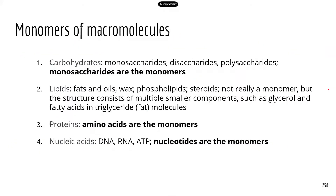Here is a quick summary of the monomers of the four macromolecules. For carbohydrates, the monomers are monosaccharides — "mono" means one, "saccharide" means sugar, so a monosaccharide is a single sugar unit. When you have all these simple sugar molecules connected and joined, that forms a polymer, so carbohydrates are big polymers of monosaccharides.